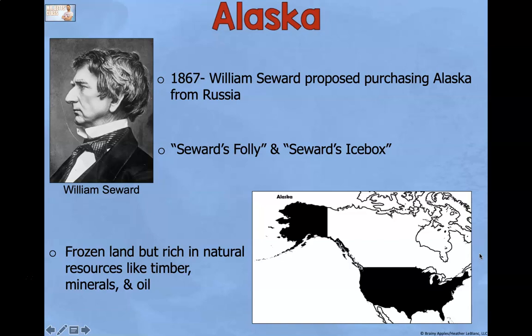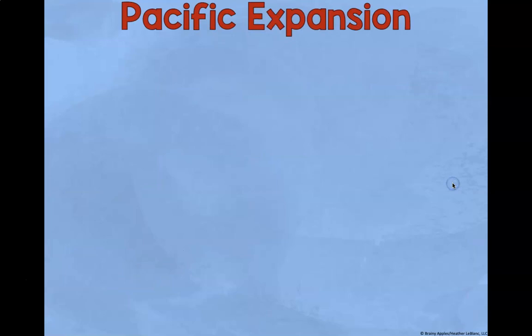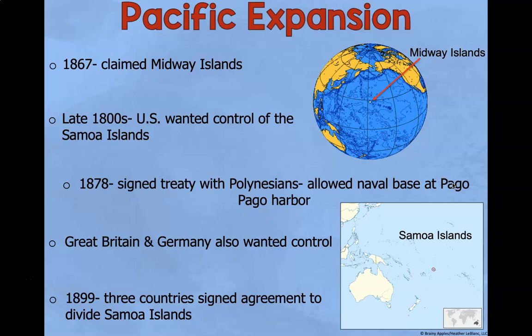In 1867, William Seward, a member of Congress, proposed purchasing Alaska from Russia. It was nicknamed Seward's Folly or Seward's Ice Box. Alaska is pretty far away from the United States. Even though it was frozen, it was rich in natural resources like timber, other minerals, and even oil. Oil was a really big resource. In the late 1800s, the US also wanted control of the Samoa Islands.